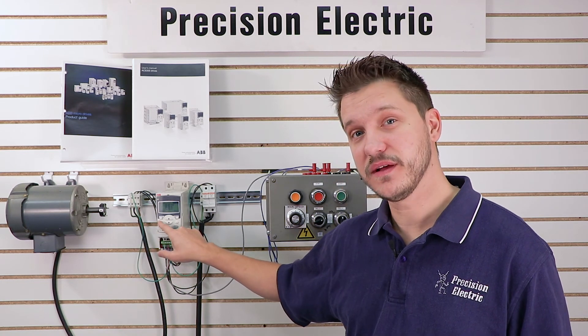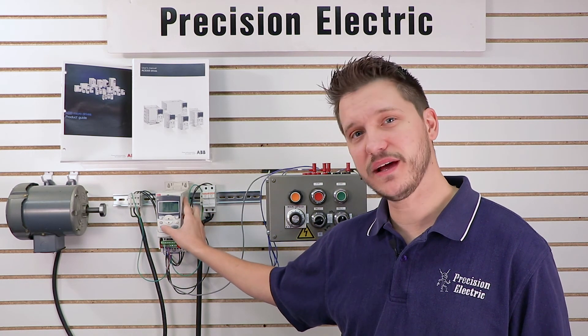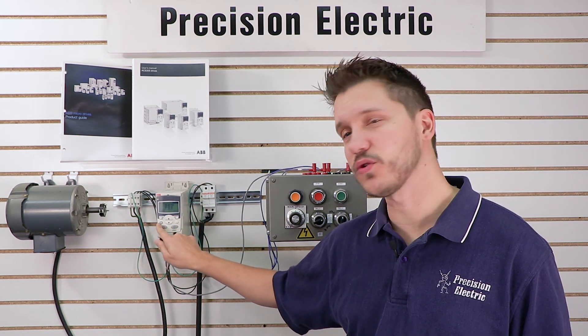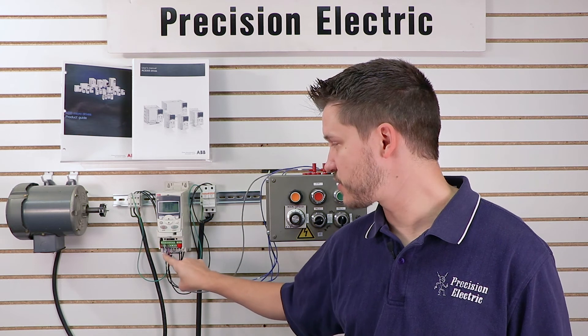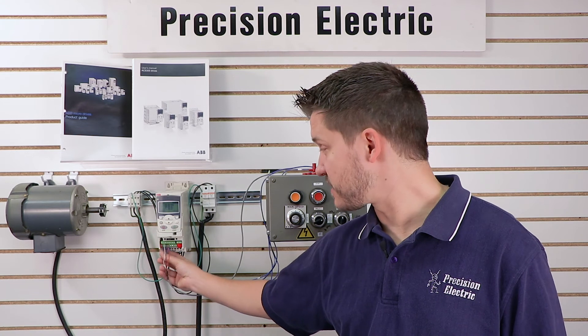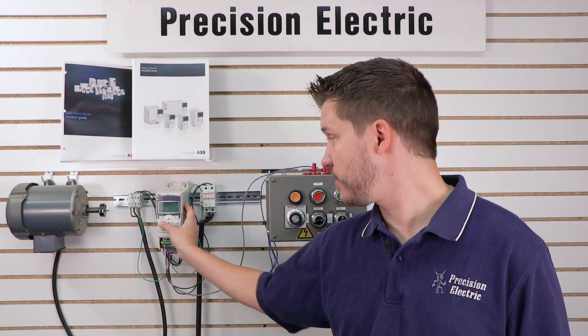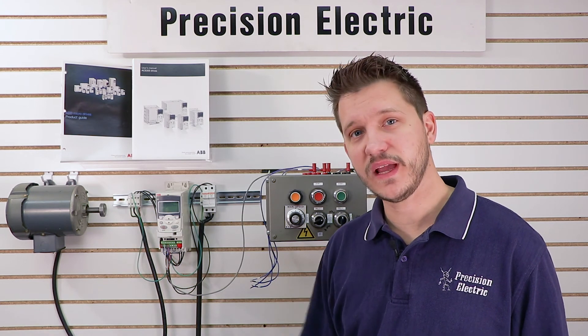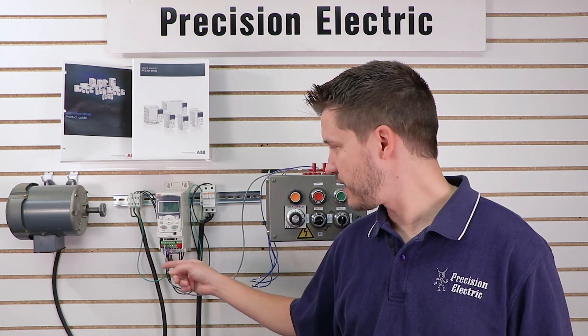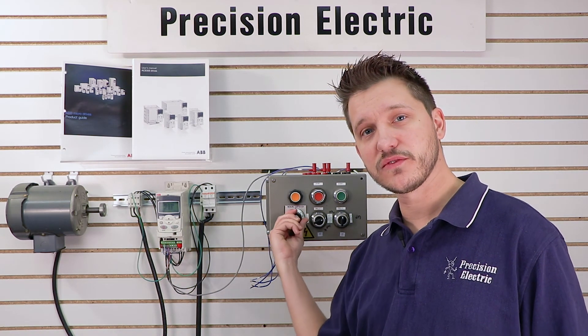Essentially all I need to do is to switch from my keypad control, which I can start right now from the keypad and stop from the keypad, is I press this local remote button and it'll actually switch over to the terminal strip. And it's going to start right away, and the reason I bring that up is because remember I jumpered my start command. So let me go ahead and switch to remote, and as soon as I switch to remote it receives that start command from my jumper, and now it's looking at my speed pot for speed.